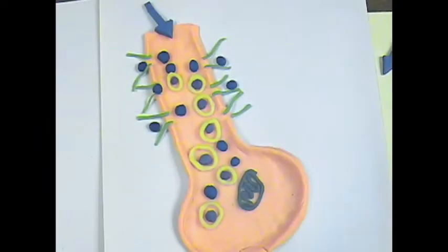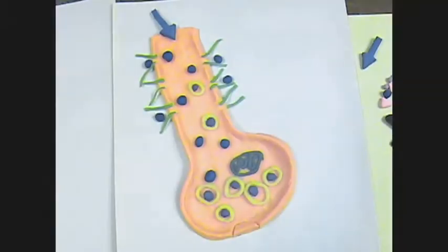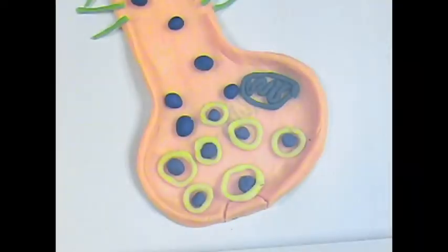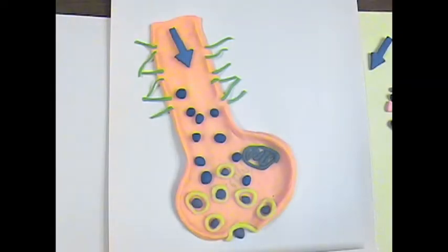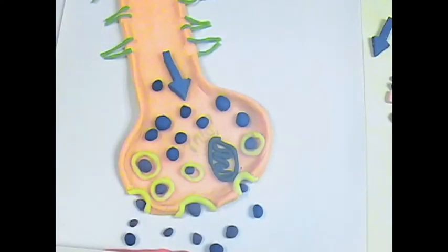A nerve impulse is sent down an axon terminal opening up calcium channels in the axon. The calcium floods into the membrane causing synaptic vesicles to undergo exocytosis and release acetylcholine into the synaptic cleft, the space between the synaptic end bulb and the motor end plate on the muscle.